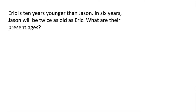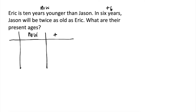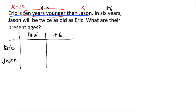Eric is 10 years younger than Jason. In 6 years, Jason will be twice as old as Eric. What are their present ages? So, meron tayo ng age nila now, and meron din tayo ng age nila in 6 years. Katulad sa ginawaan natin sa previous problems, gagawa muna tayo ng table. Since Eric is 10 years younger than Jason, i-assign natin ang current age ni Jason as x. Since Eric is 10 years younger, yung age niya ngayon should be x minus 10. Since ang age ni Eric ngayon is x minus 10, in 6 years, it should be x minus 10 plus 6, which is just equal to x minus 4.